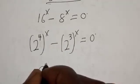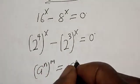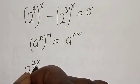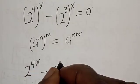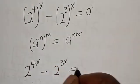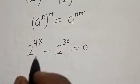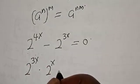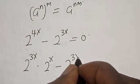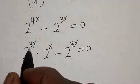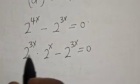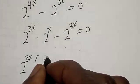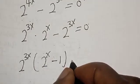Remember, if you have 8 raised to power n times 8 raised to power m, it is the same thing as 8 raised to power n times m. Now we have 2 raised to power 4x minus 2 raised to power 3x is equal to 0. Now 2 raised to power 4x can be expressed as 2 raised to power 3x multiplied by 2 raised to power x, minus 2 raised to power 3x is equal to 0. We factor out 2 raised to power 3x to get 2 raised to power 3x into 2 raised to power x minus 1, equal to 0.